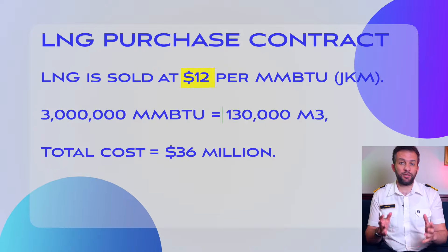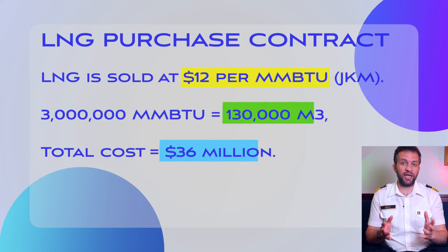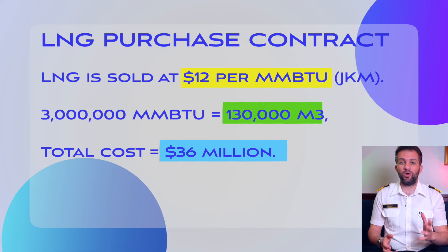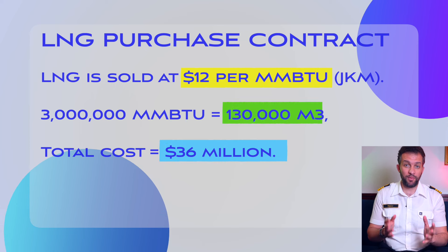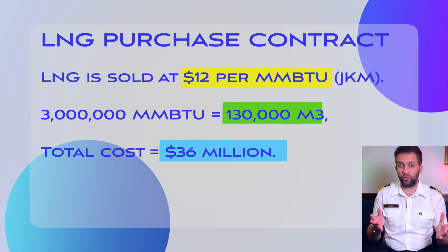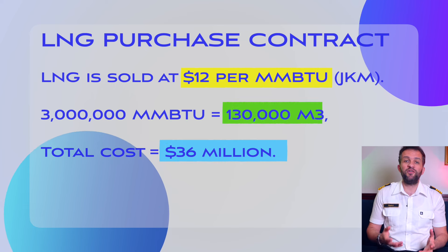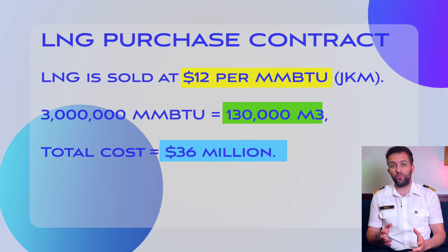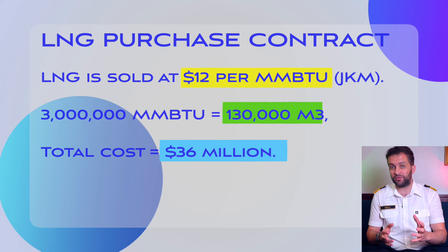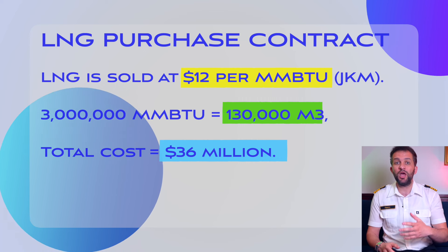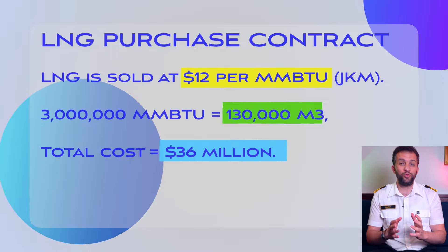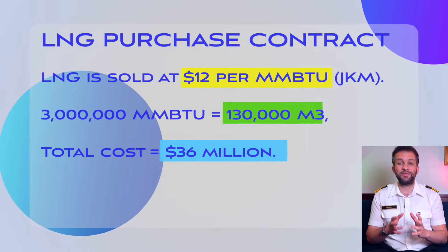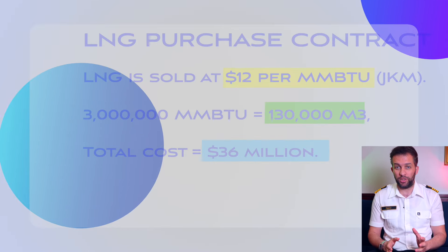Natural gas or LNG prices are often quoted in dollars per MMBTU. This pricing can fluctuate based on supply and demand, geopolitical factors, and market conditions. For instance, a contract may state that LNG is sold at $12 per MMBTU, which is today's price. If a buyer purchased 3 million MMBTU — which is an average volume of 130,000 cubic meters — the total cost would be $36 million USD.